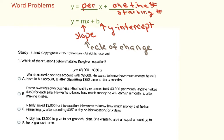Let's look at this example: 'Which of the situations below matches the given equation?' We have y equals 3000 minus 350x. The 350 is our slope because it's the coefficient on the x term, so it's the number that changes. The 3000 is going to be that one-time or starting number.